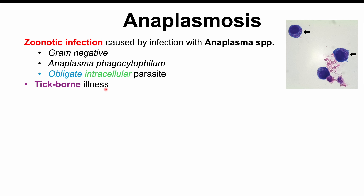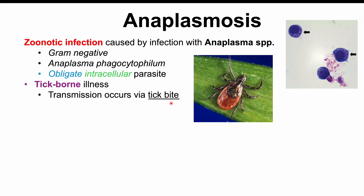Anaplasmosis is a tick-borne illness transmitted via tick bites, although there have been rare cases of transmission via blood transfusion — if one person has anaplasmosis and gives blood, the recipient could also be infected. The particular tick that carries this bacteria is known as the Ixodes tick, or the black-legged tick, or the deer tick. This tick also carries other bacteria that cause Lyme disease and babesiosis, so it can harbor multiple types of infective organisms.